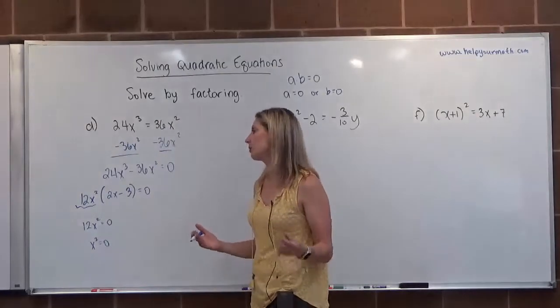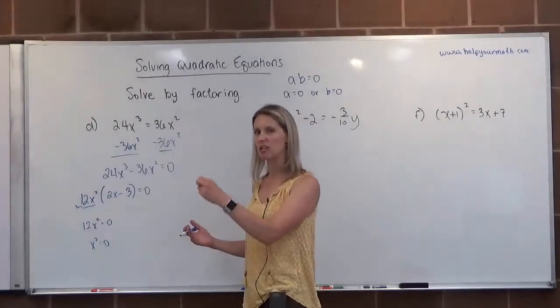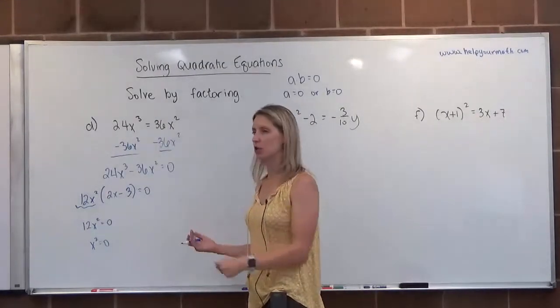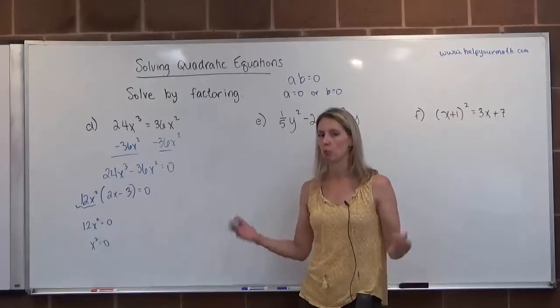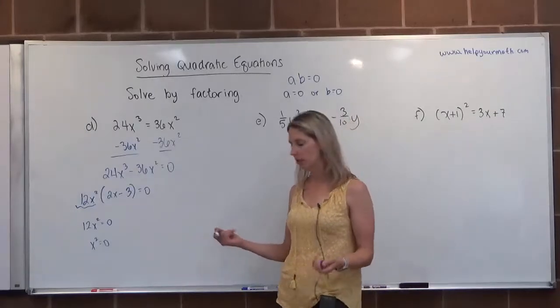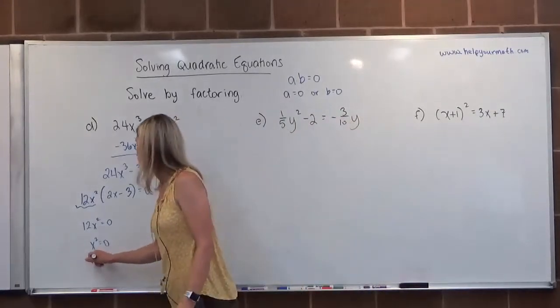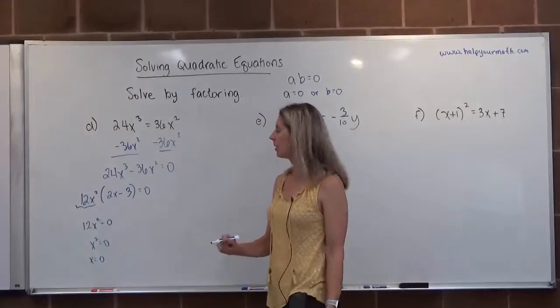So if there's a GCF that's just a number, you can disregard it when finding the zeros. Now x squared is equal to zero. What number squared is equal to zero? That would be zero itself.